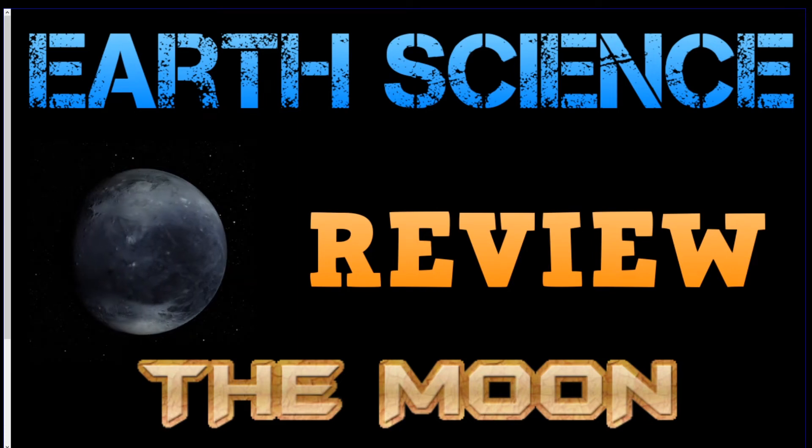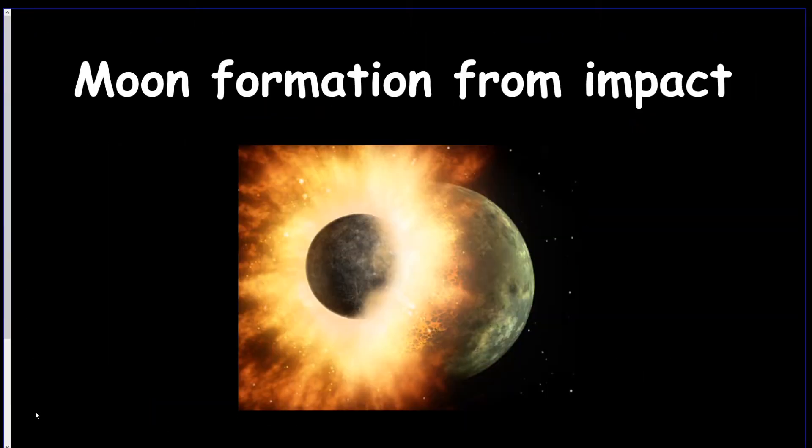Hi everyone and welcome to the next Earth Science Review video. This video is going to be a quick overview about the Moon. So the Moon formed from some sort of impact from a planet-like object that hit the Earth at a glance and essentially sent part of the Earth into space and it formed the Moon.